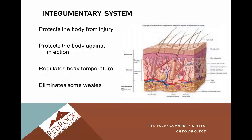The integumentary system is essentially our skin, protecting the body from injury. We don't understand how important our skin is until we have a wound or a break in intact skin. Intact skin is one of the most important things that keeps us from infections — as soon as somebody has a wound, the risk for infection increases. The purpose is protecting the body from injury and against infection. Another really important function is regulating body temperature, and also eliminating some waste through perspiration.